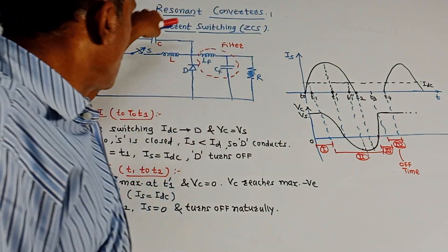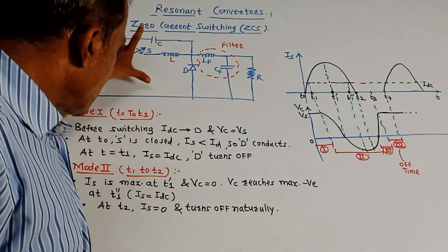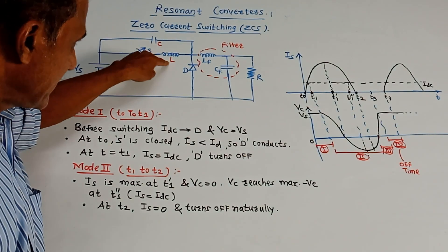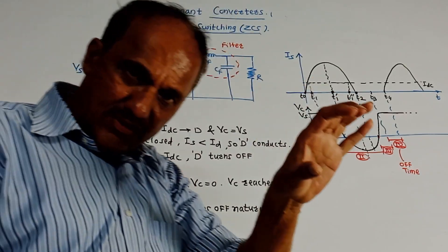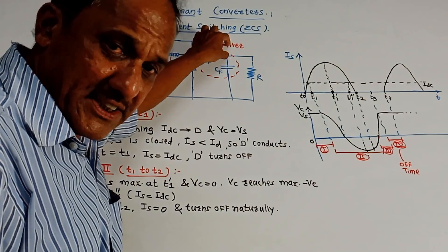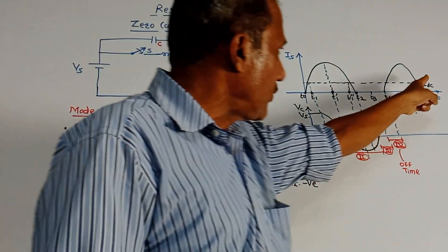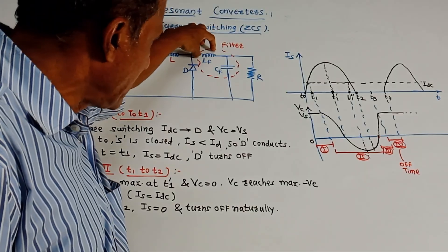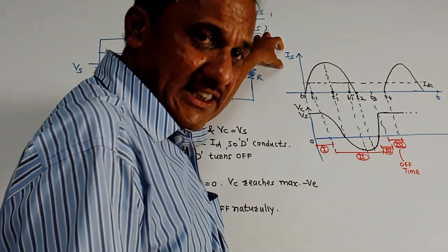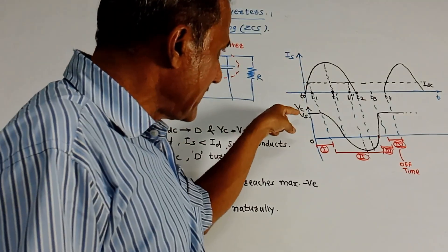Next part is ZCS — zero current switching. Whenever current crosses the zero line, switching action takes place. In the corresponding circuit diagram: VS is the applied voltage, S is the switch, L and C form the tank circuit or resonant circuit. Lf and Cf act as a filter. The value of Lf is kept large enough so that the output current IDC remains constant. R is the load connected at the output. Two waveforms are shown: IS (switching current) versus time, and voltage across capacitor VC versus time.